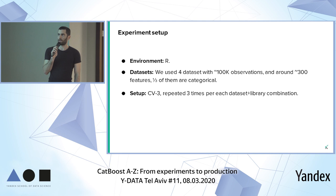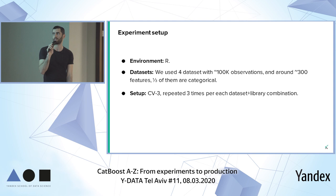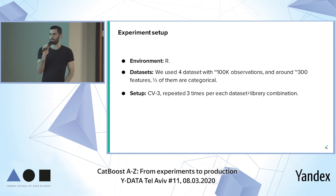About the experiment setup: we worked in R, we had four datasets, each with 100K observations and 300 features, and around a third of them were categorical. We used three-fold cross-validation repeated three times per each dataset and library combination — so for each dataset we ran CatBoost, LightGBM, and XGBoost and repeated it three times.